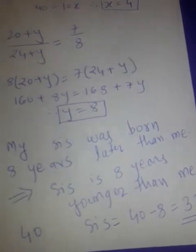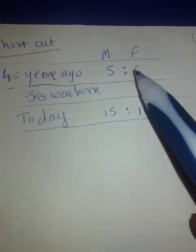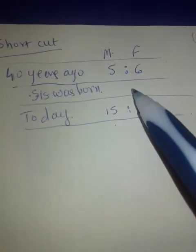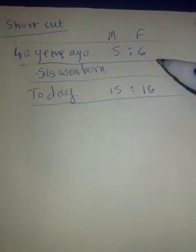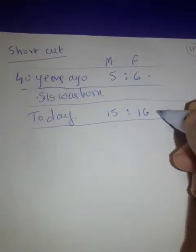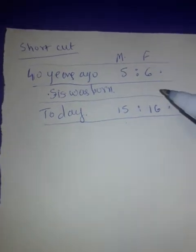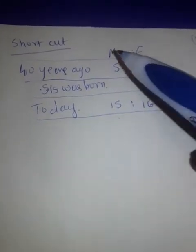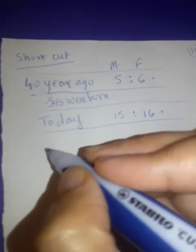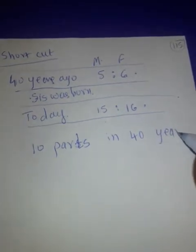We used all 3 ratios. Now let's see the shortcut. 40 years ago when I was born, mother and father's ratio was 5 to 6. Today the ratio is 15 to 16. So from birth to today — 40 years have passed — and the ratio has changed by 10 parts: 5 became 15, 6 became 16.